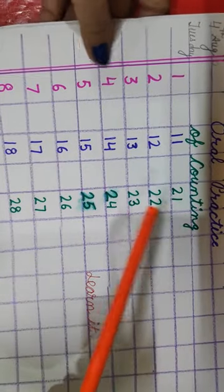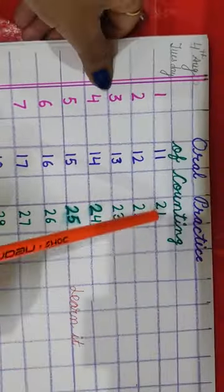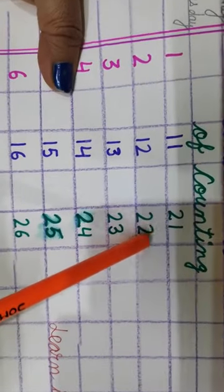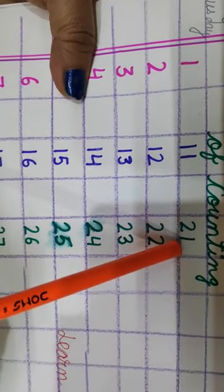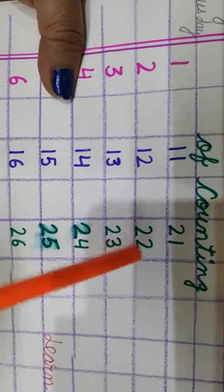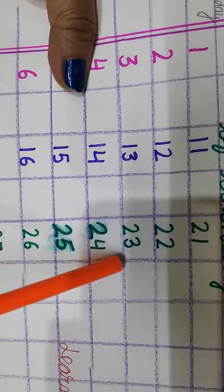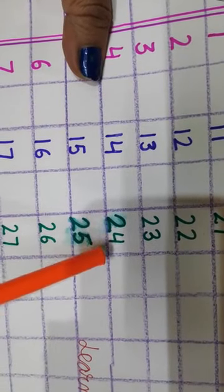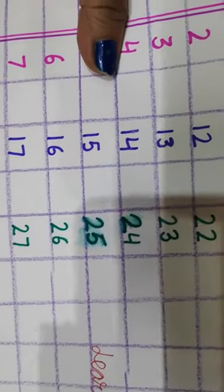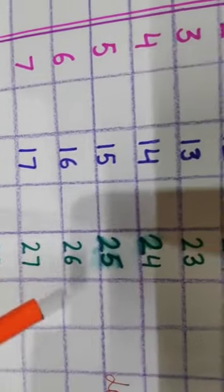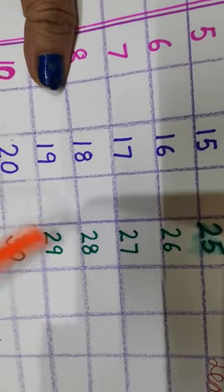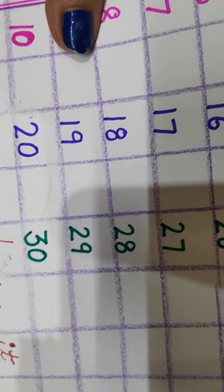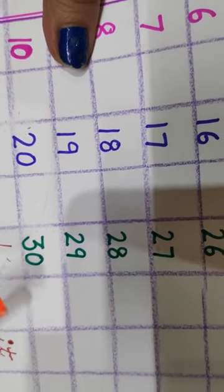Okay children. Now next counting is 21 to 30. What is this? You know. This is 2 and this is 1. 2, 1, 21. 2, 2, 22. 2, 3, 23. 2, 4, 24. 2, 5, 25. 2, 6, 26. 2, 7, 27. 2, 8, 28. 2, 9, 29. 3, 0, 30.